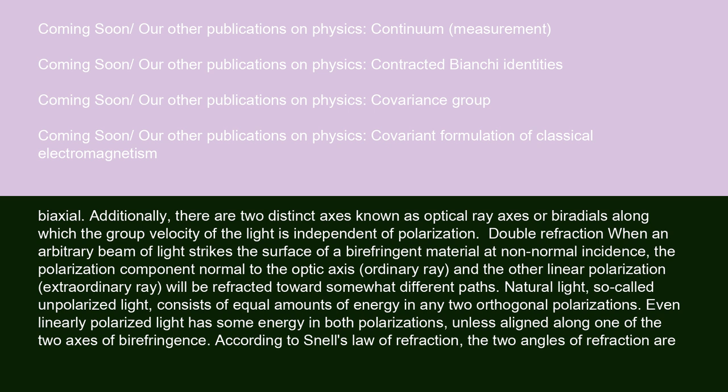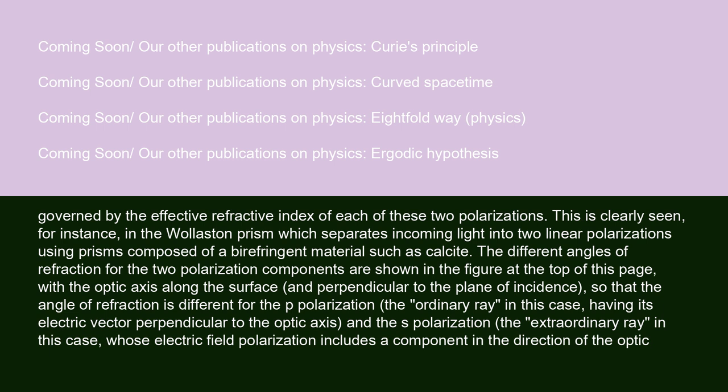According to Snell's Law of Refraction, the two angles of refraction are governed by the effective refractive index of each of these two polarizations. This is clearly seen, for instance, in the Wollaston prism, which separates incoming light into two linear polarizations using prisms composed of a birefringent material such as calcite. The different angles of refraction for the two polarization components are shown in the figure at the top of this page, with the optic axis along the surface and perpendicular to the plane of incidence, so that the angle of refraction is different for the p-polarization — the ordinary ray in this case, having its electric vector perpendicular to the optic axis — and the s-polarization, the extraordinary ray in this case, whose electric field polarization includes a component in the direction of the optic axis.